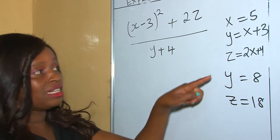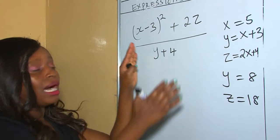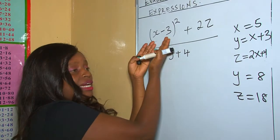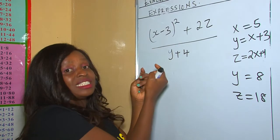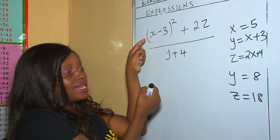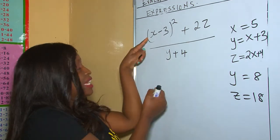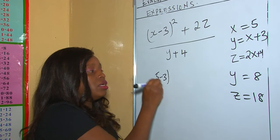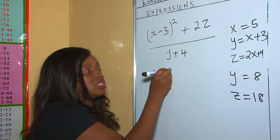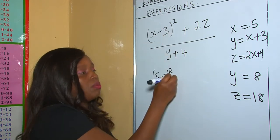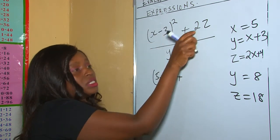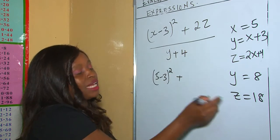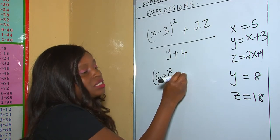Now that we have all the values, we come back to the question and replace the letters with the numbers. Where we have x, we substitute 5. So we have (5 take away 3) all squared, plus 2z, which is 2 times 18, which is 36.